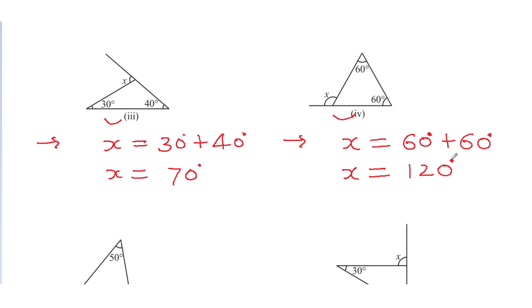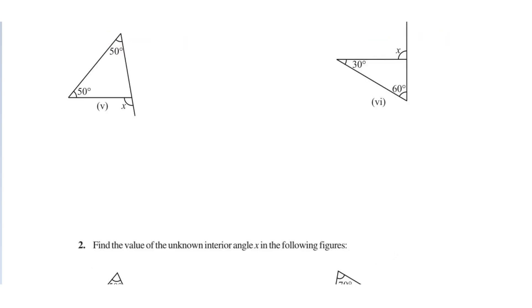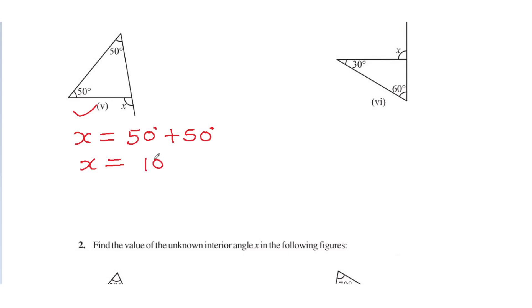Now let's see figure number 5. What will x be? x is equal to 50 degrees plus 50 degrees — we need to add both. So x is equal to 50 plus 50, that is 100 degrees.